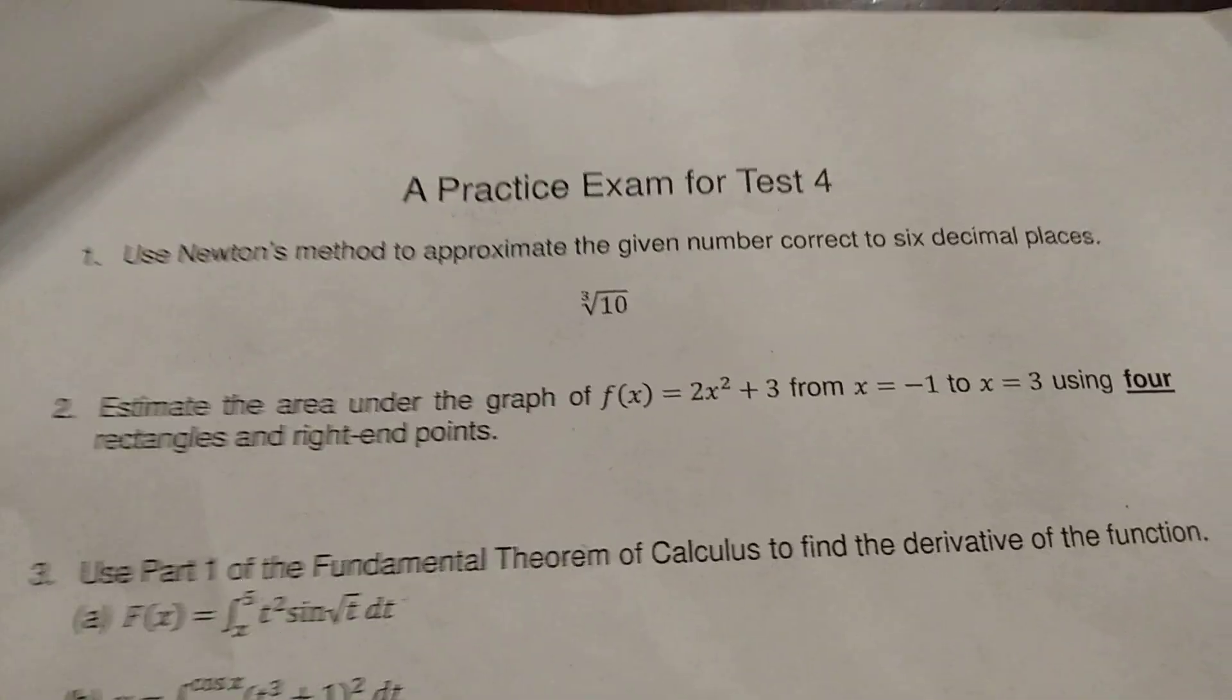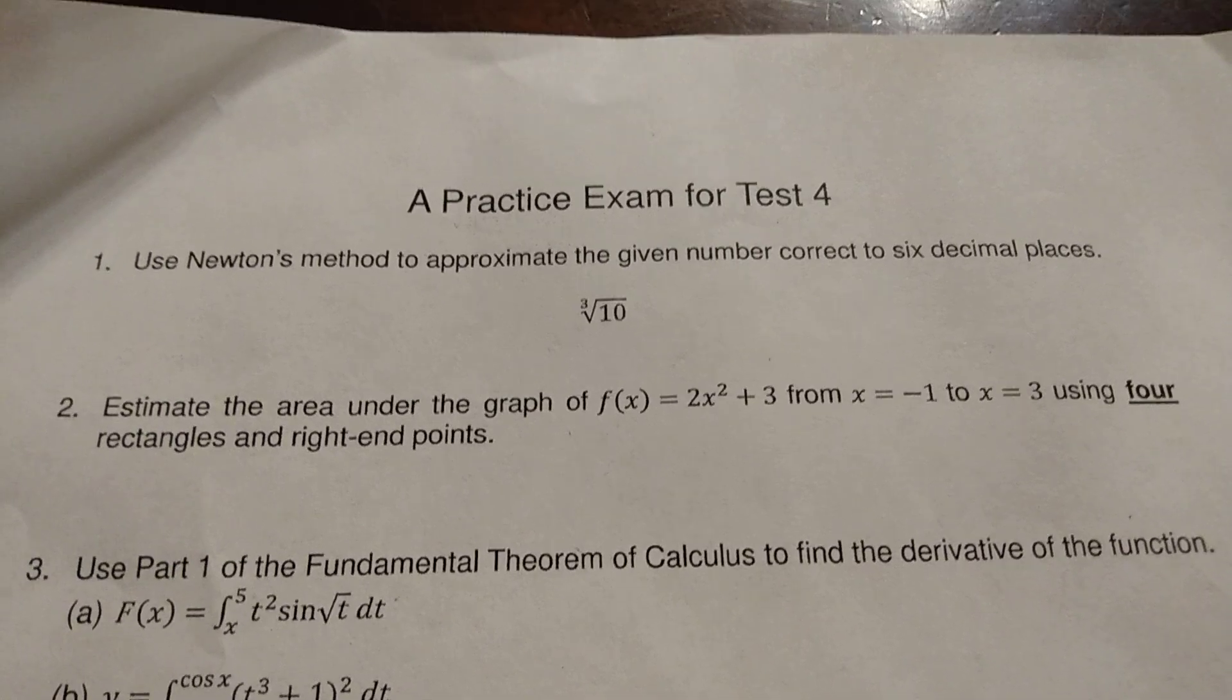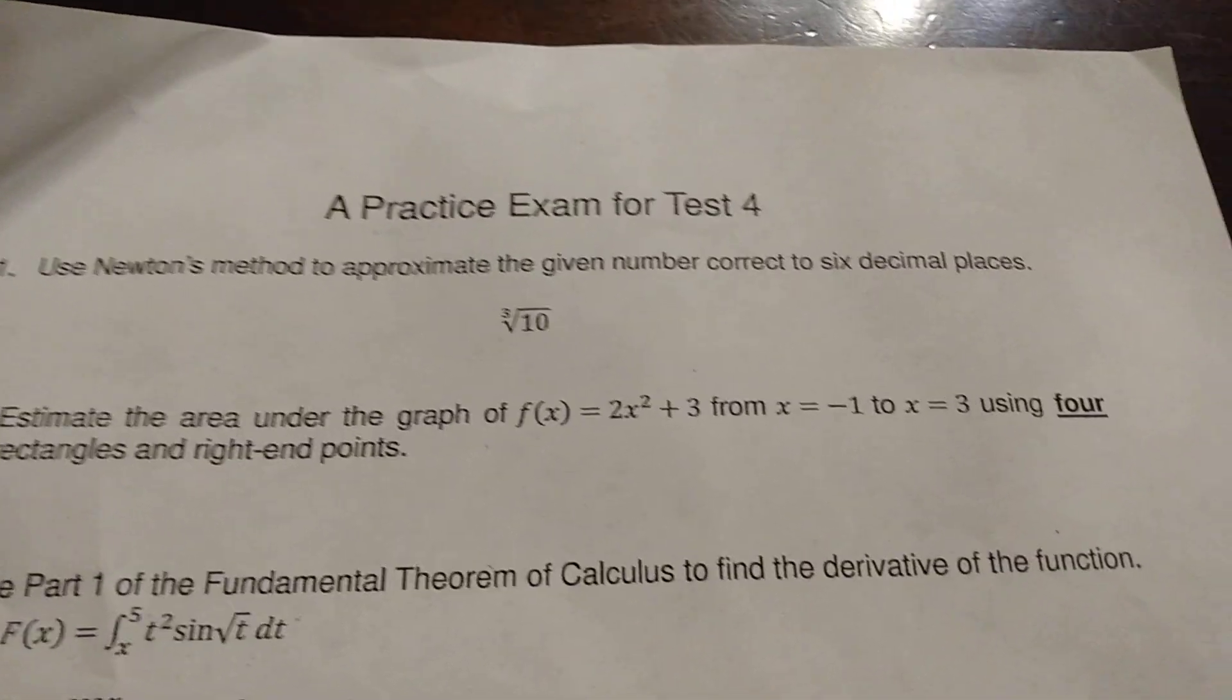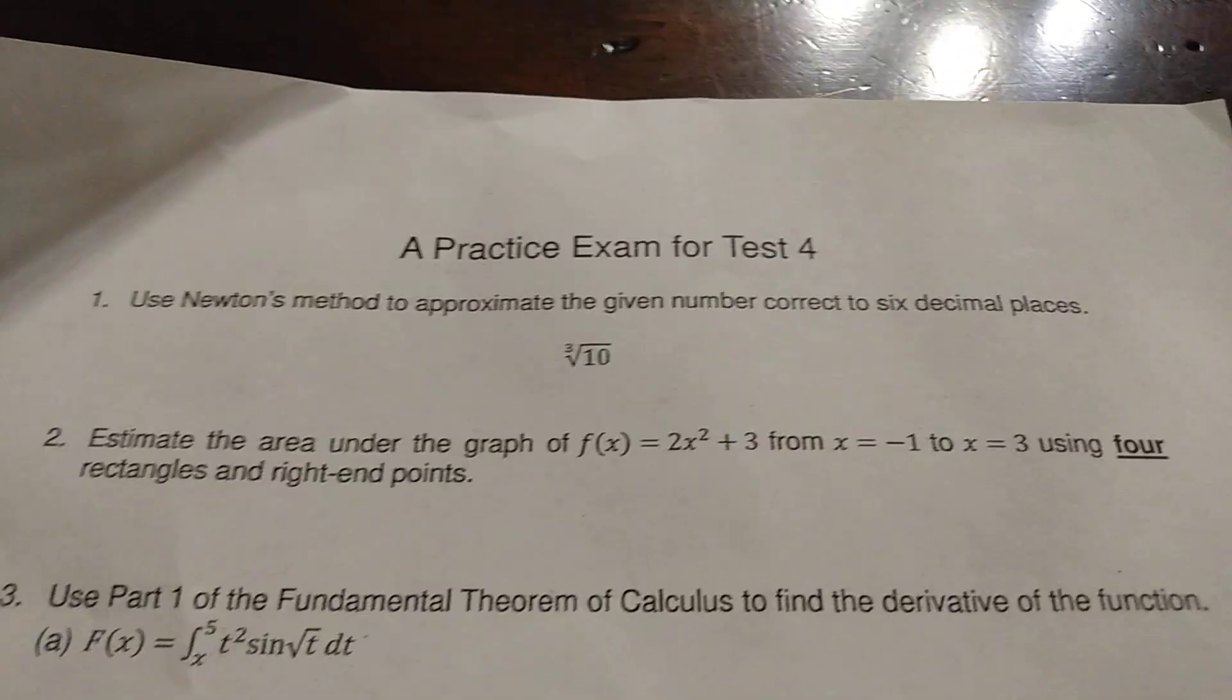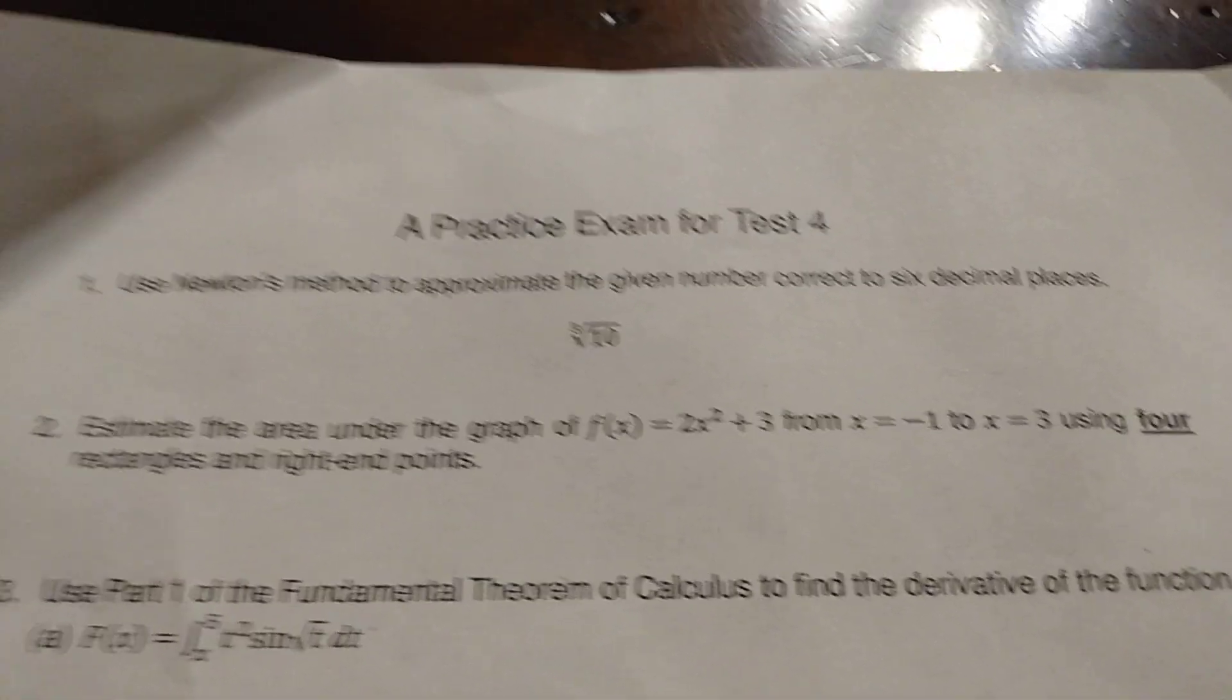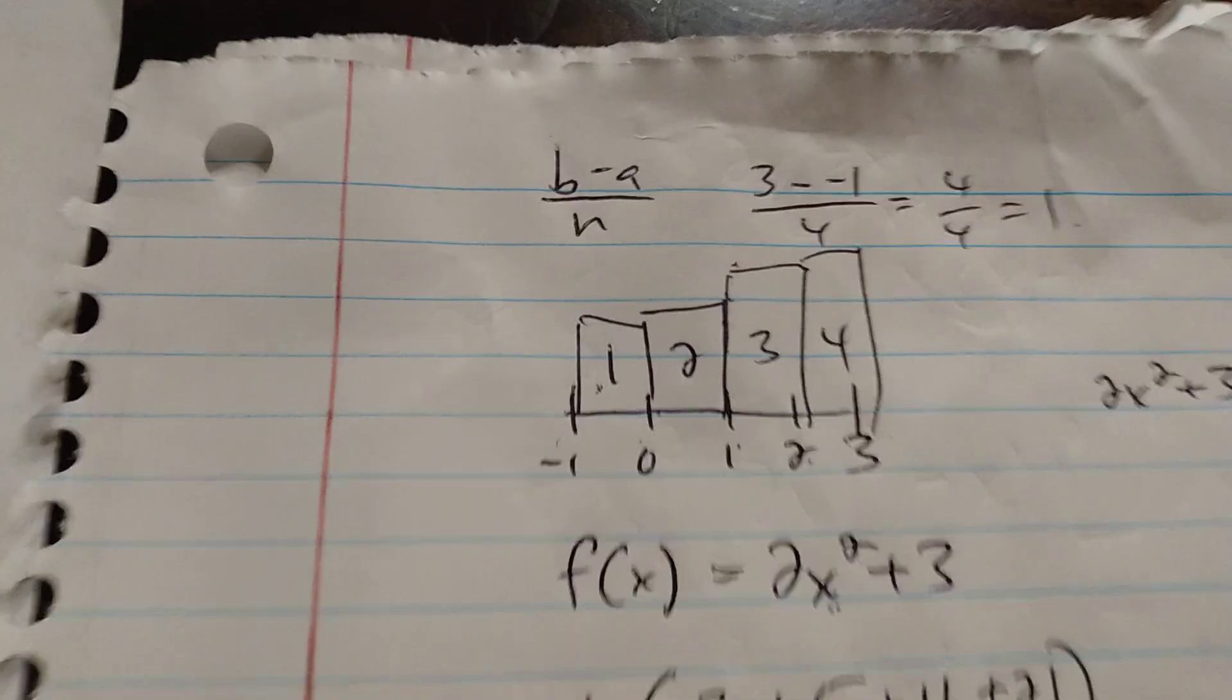Okay, question number two here. Estimate the area under the graph of f of x equals 2x squared plus 3 from x equals negative 1 to x equals 3. Use four rectangles and right endpoints. Okay, so this is rectangle rule.